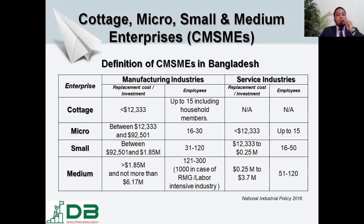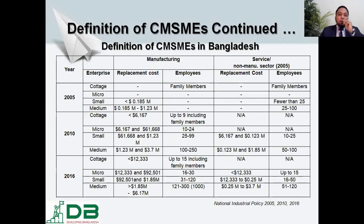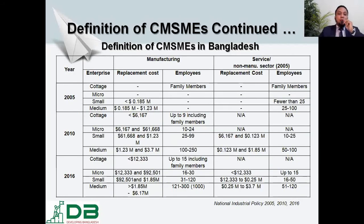In summary, this is the definition of Cottage, Micro, Small, and Medium Enterprises in Bangladesh currently. Previously, under the National Industrial Policy 2010 and even earlier, some segments were different or absent. For example, in the industrial policies of 1986, 1991, 1999, 2005, and 2010, there were differences. Notably, the micro segment was absent in the 1986, 1991, and 1999 industrial policies — it was introduced for the first time in the National Industrial Policy 2005.